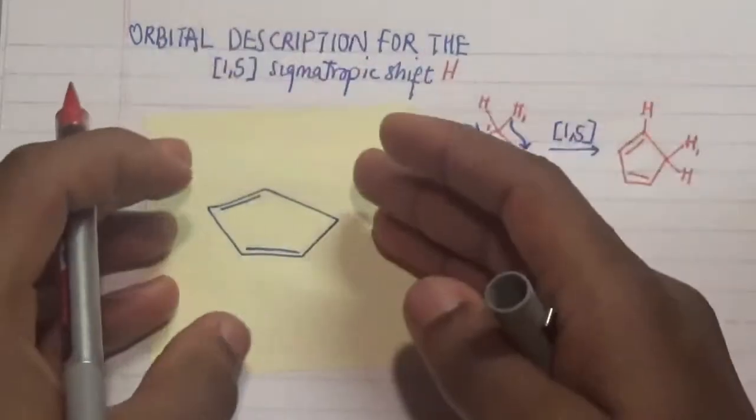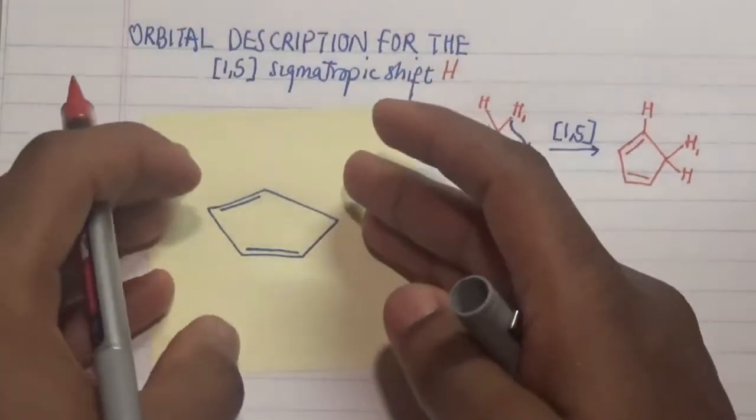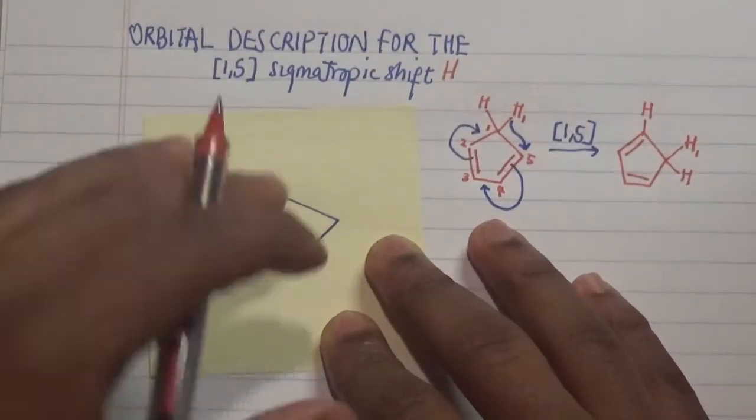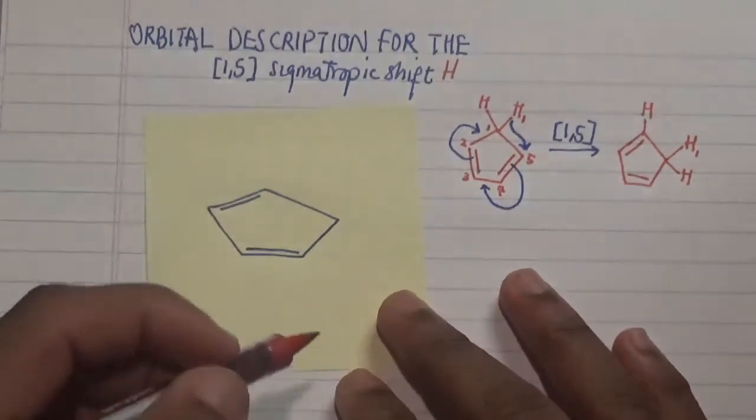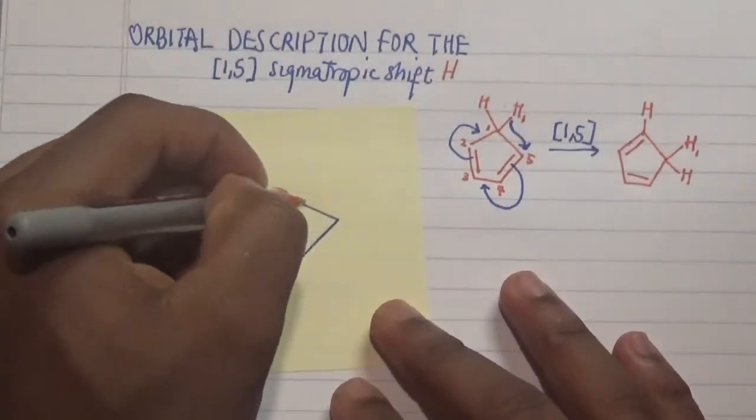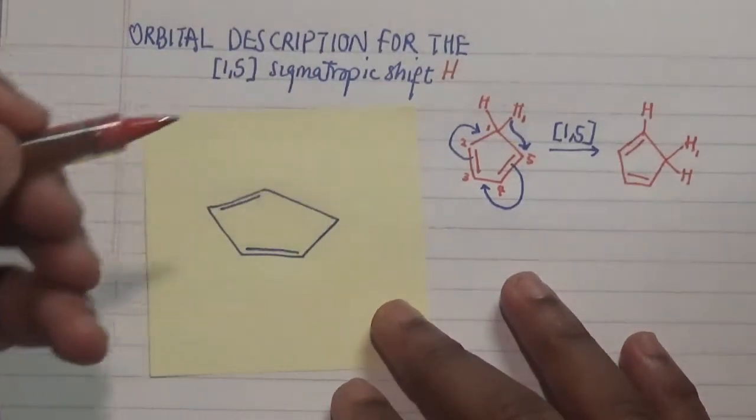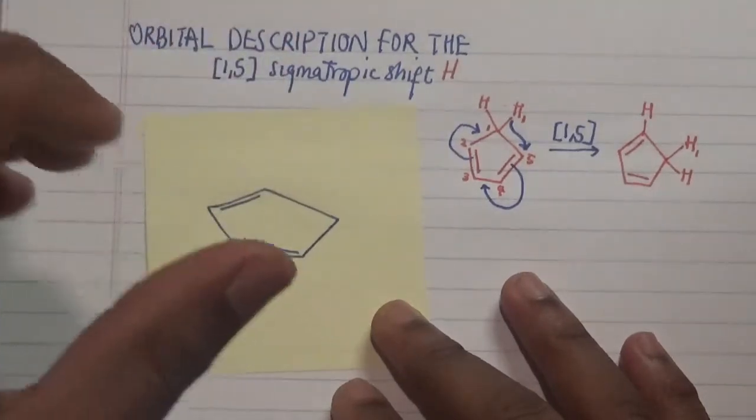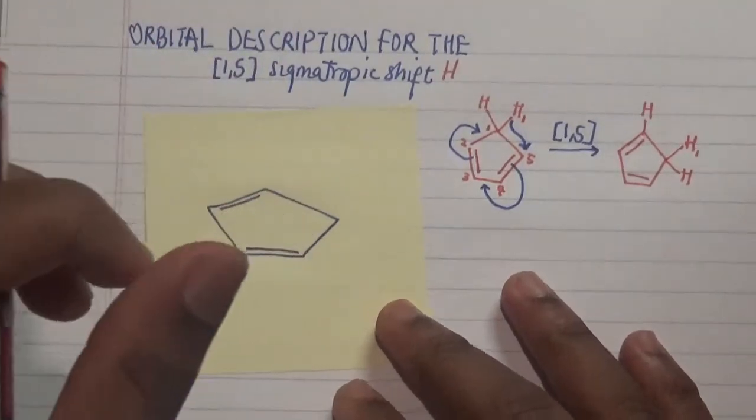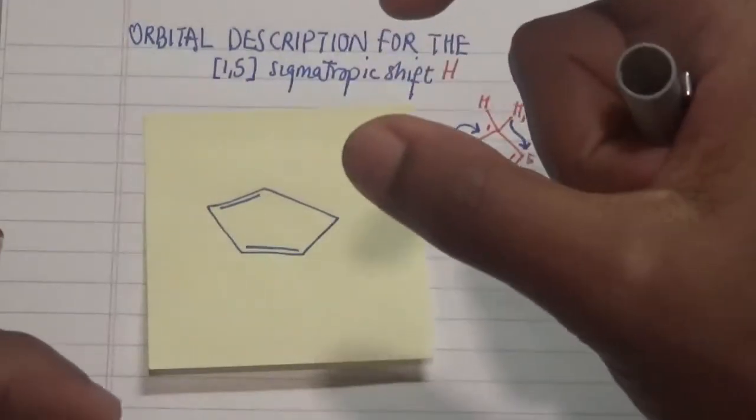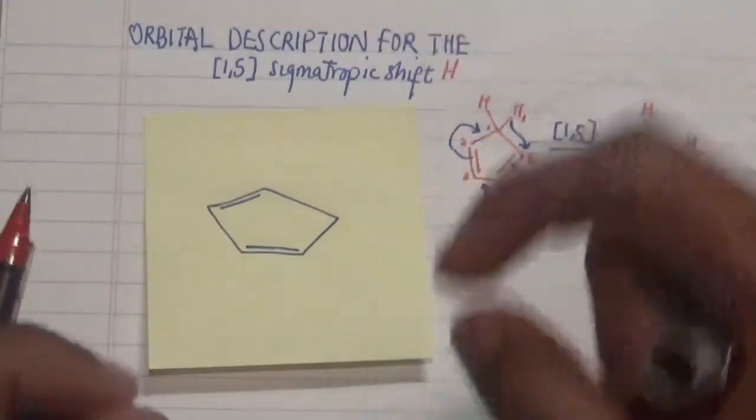Let's go into this particular compound and look at how we can position our orbitals. First, looking at this saturated carbon, we have sp3 carbon that is overlapping with a 1s hydrogen atom.